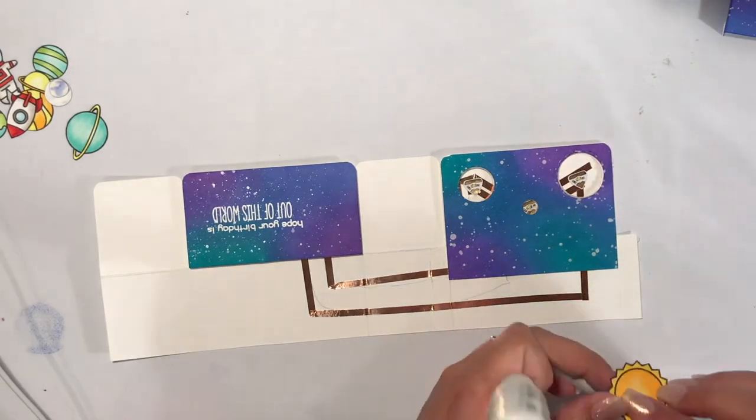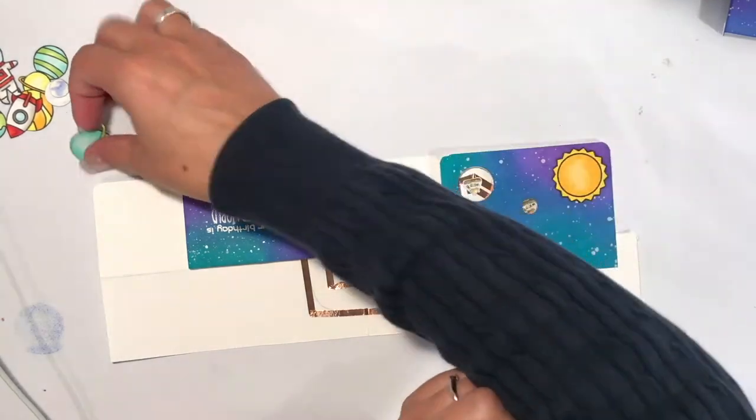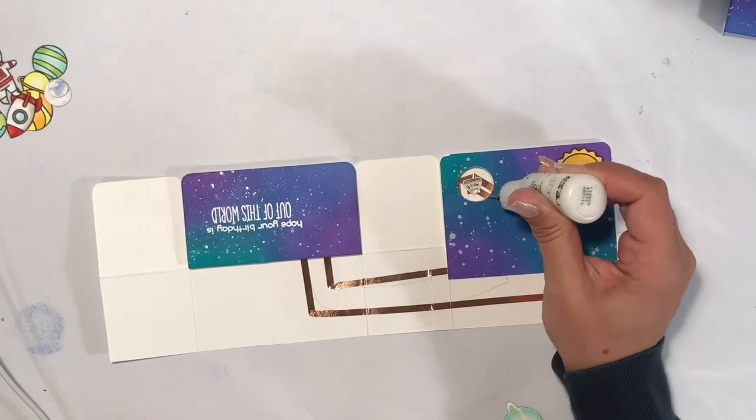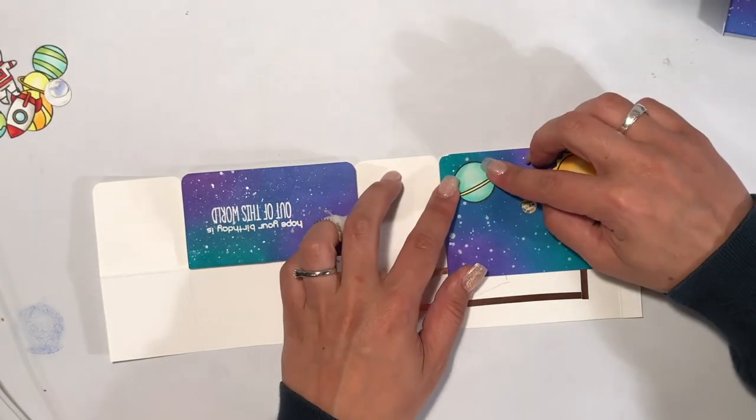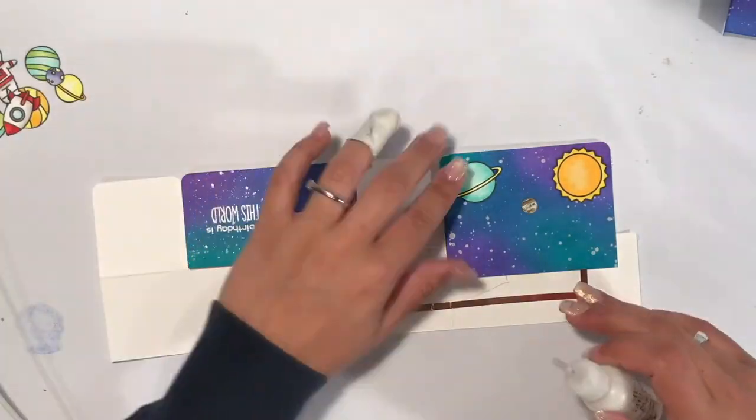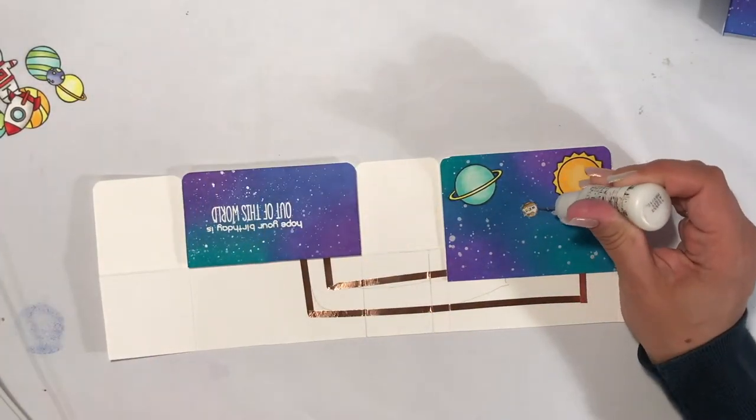To glue my planets on top of the background I just used some Multi Matte Medium from Ranger because I was afraid that the glue would go out of the sides and glue to everywhere. This glue dries matte and nobody will ever see that something went out.